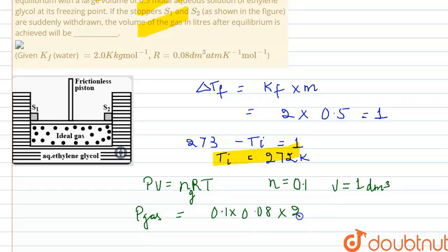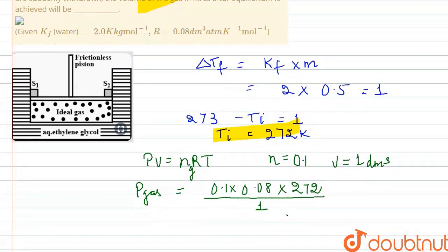That is 0.1 into 0.08 into temperature 272, divided by the volume. Volume is 1 dm cube as given to us in the question. So upon solving this, the pressure of the gas is coming out to be 2.176 atm.